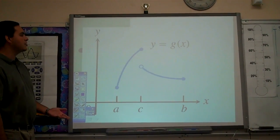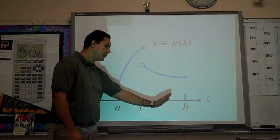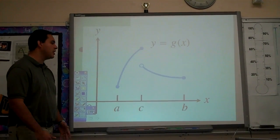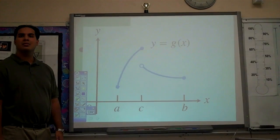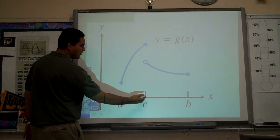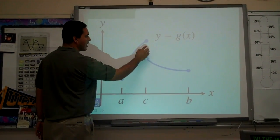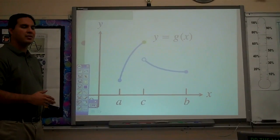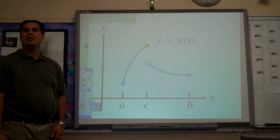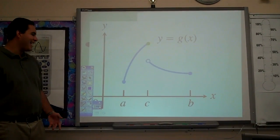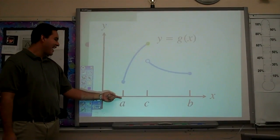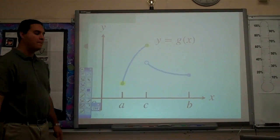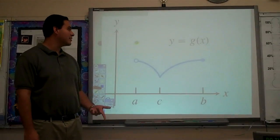Next one — function G on the interval from A to B. Where does this function G achieve its absolute max? At C. If you notice at C, the output value is here and it is the highest output value on the interval. How about the absolute min? At A — we have the lowest output value there, and that would be the absolute minimum.